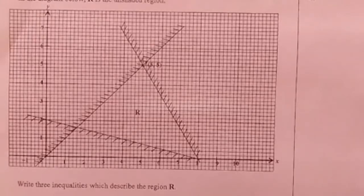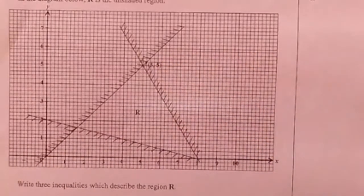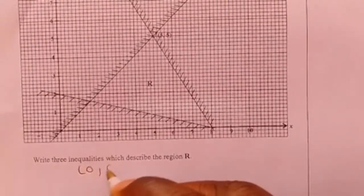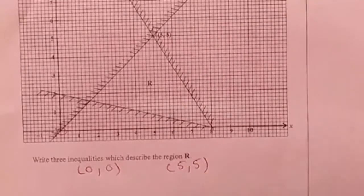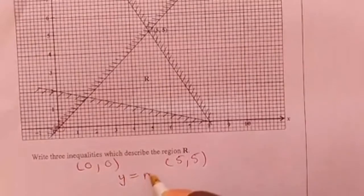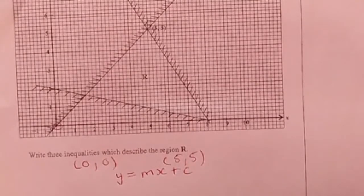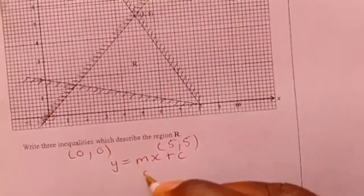We are now moving on to the second inequality of the same question. Let me look at this line which is passing through the origin as well as (5, 5). The first point is the origin, which is (0, 0). Then the next point is (5, 5). C is the y-intercept, or the value at which the straight line cuts the y-axis. You can notice that this straight line is cutting the y-axis at 0, so c is equal to 0.